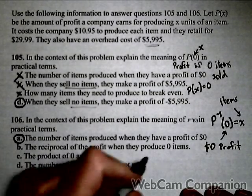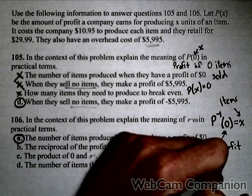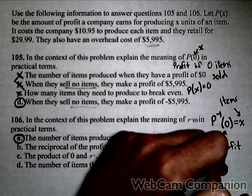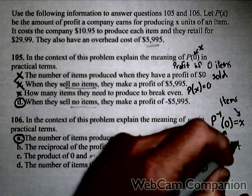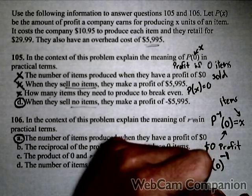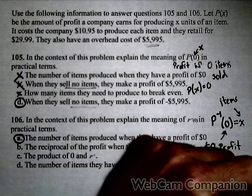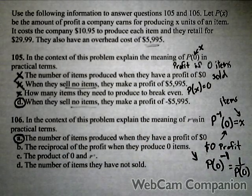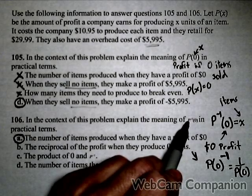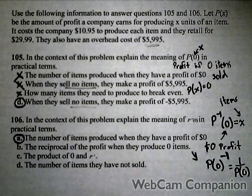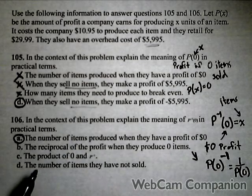The reciprocal of profit when they produce 0 items - that would be P(0) inverse, or to the negative 1, I should say, not inverse. That's raising P(0) to the negative 1, which would be 1 over P(0), because we're treating negative 1 like an exponent. When it's written with the function name, it's actually inverse notation. It's a subtle difference, but make sure you're able to identify that difference.